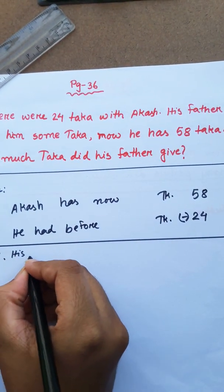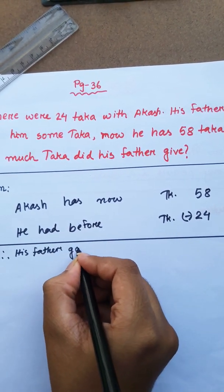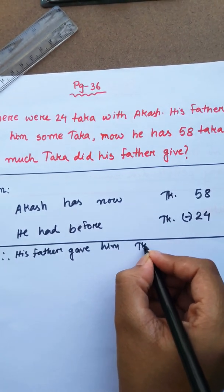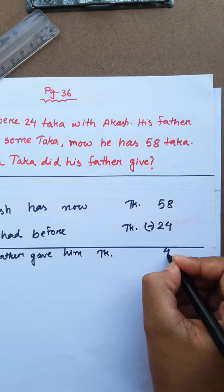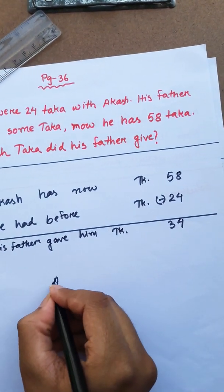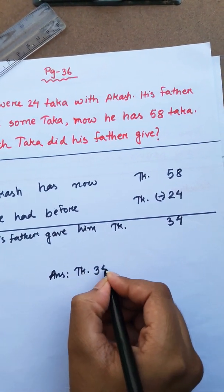Therefore his father gave him taka: 8 minus 4 gives 4, 5 minus 2 gives 3. Answer: 34 taka.